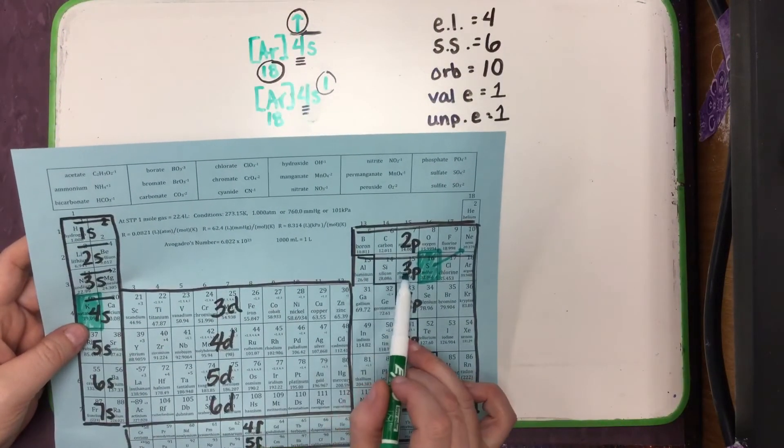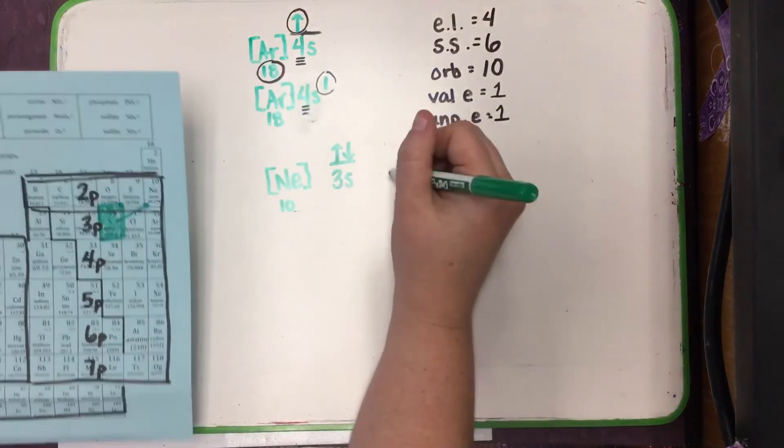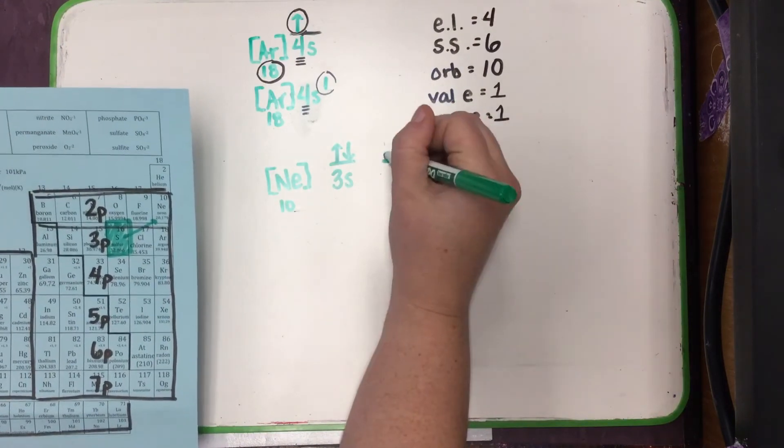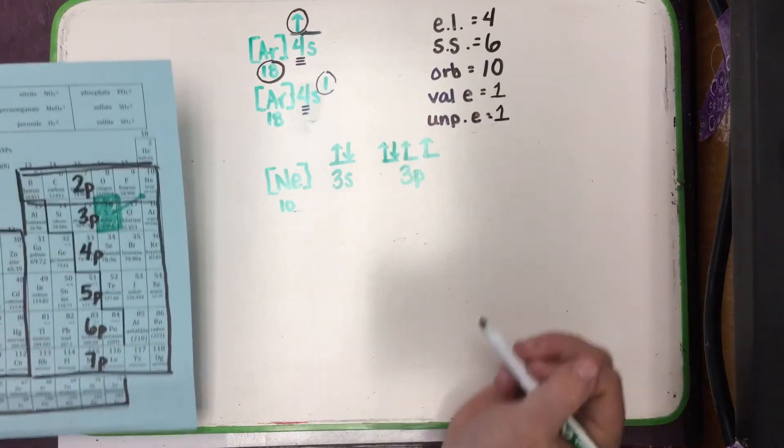11 and 12 are in 3S, 11, 12. And 13, 14, 15, and 16 are in 3P. So that's a total of 4 arrows. Remember, P's always get 3 lines. All the up arrows get filled in first, and then the down arrow.